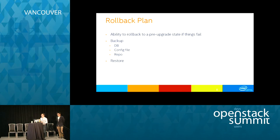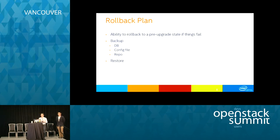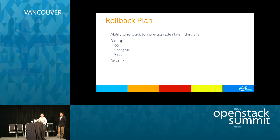We also needed a rollback plan. Every upgrade should have one, though we preferred not to roll back in production due to unexpected issues. We tested the rollback plan in our beta and VM environments to ensure we could return to the pre-upgrade state. If something fails and we can't figure it out, we need to bring services up as soon as possible and not exceed the maintenance window. To roll back, you should back up the database, configuration files, and repository, then restore them to the environment.